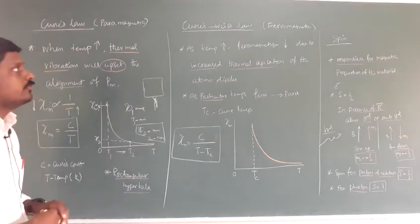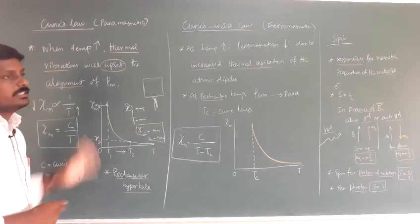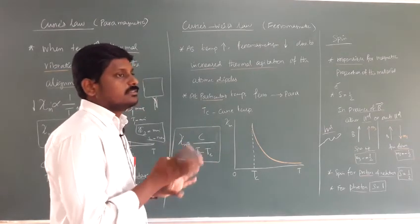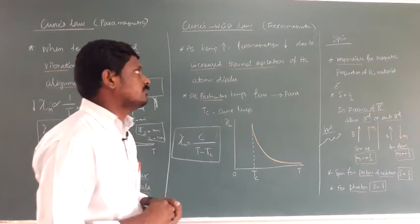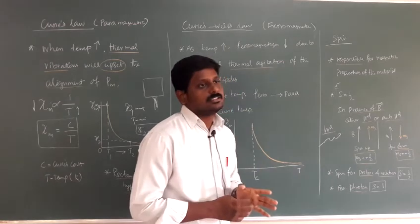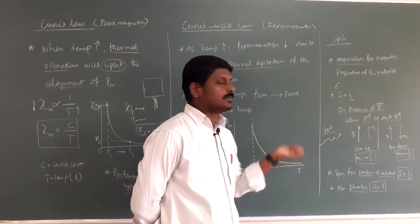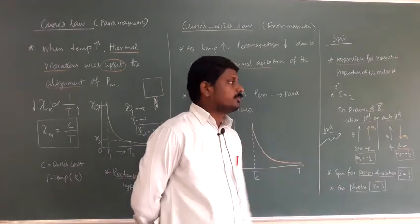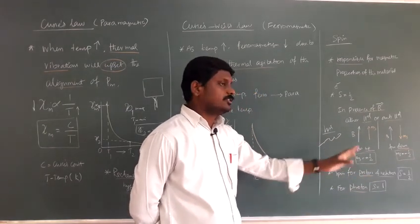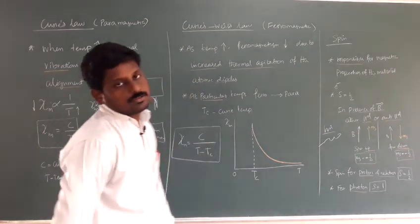In this class, we discussed Curie's law, Curie-Weiss law, and spin. For Curie's law: increasing temperature decreases magnetic susceptibility. For Curie-Weiss law: increasing temperature decreases ferromagnetism, and at Curie temperature, ferro becomes para. For spin: electrons in a magnetic field have spin up (plus 1/2, parallel) or spin down (minus 1/2, anti-parallel). Spin for proton and neutron is 1/2; for photon it is 1. Thank you, students.